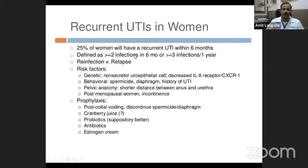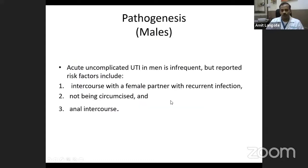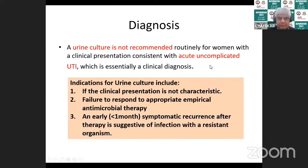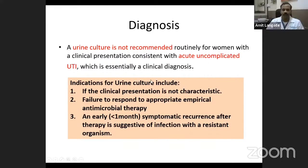Recurrent UTI is defined as more than two infections in six months or more than three infections in one year. Risk factors include genetic causes, behavioral factors like spermicide and diaphragm use, anatomical causes, and postmenopausal causes. Males can rarely get recurrent UTI — it can happen with intercourse with a female partner who has recurrent infections, if uncircumcised, or with anal intercourse. Urine culture is not routinely recommended except when clinical presentation is atypical, there is no response to therapy, or infection recurs within one month with a resistant strain.